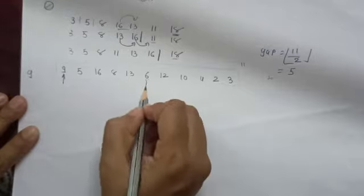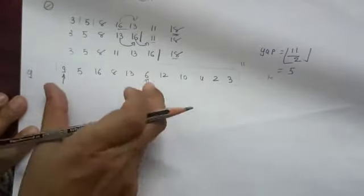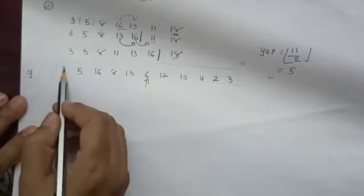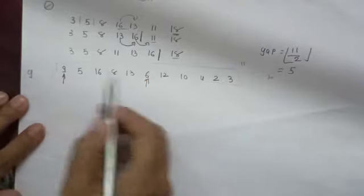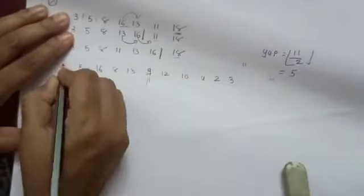We will perform Insertion Sort with a gap of 5. My first element is at index 0 (9) and the element at gap distance (index 5) is 6. Now I will perform Insertion Sort on 9 and 6 only — other elements remain as they are. As 6 is smaller than 9, 9 needs to be shifted. So 9 comes here and 6 comes here.